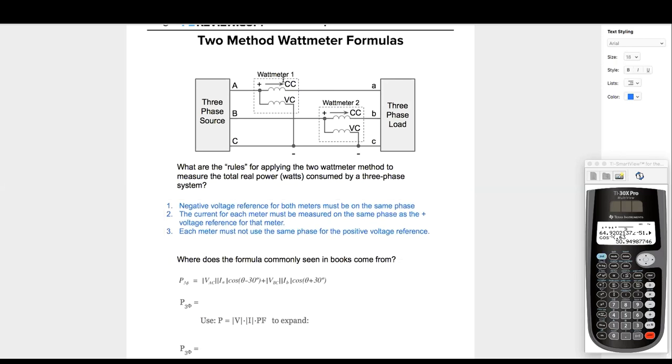Up here, CC means current coil. You see that inductive coil is measuring the current. VC means voltage coil. You see coil, it's going to measure the voltage. So wattmeter one is measuring what? IA, right?